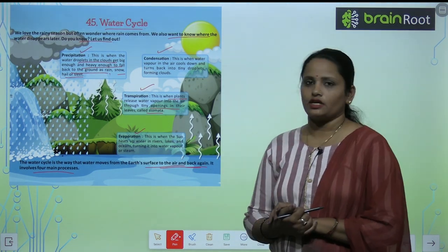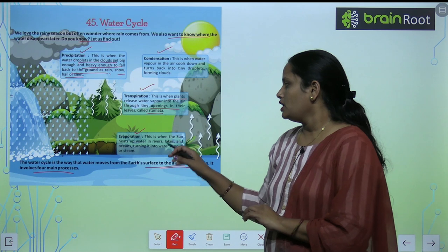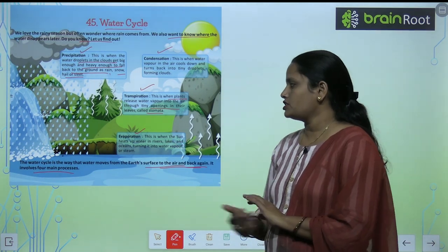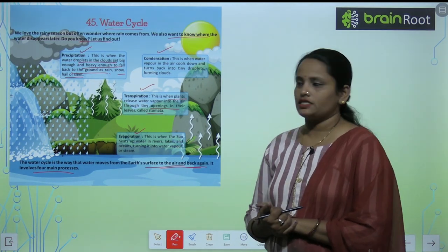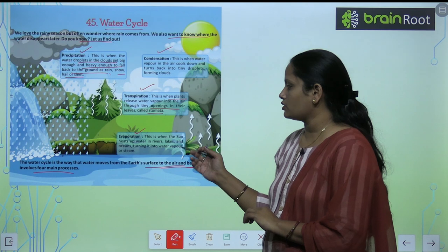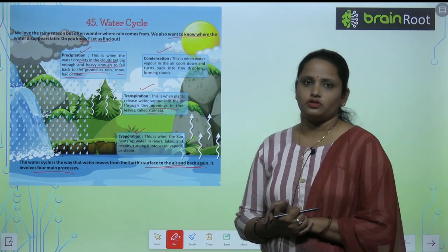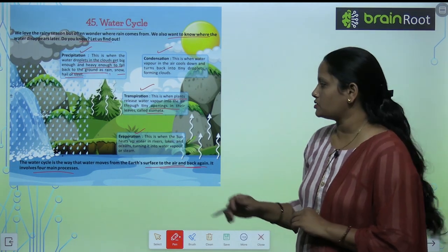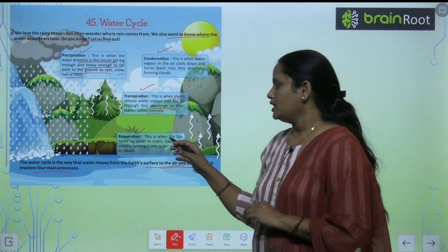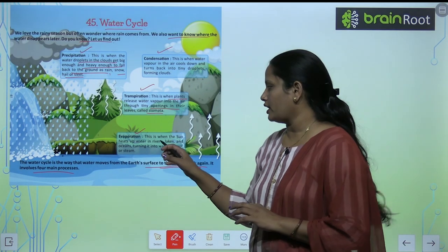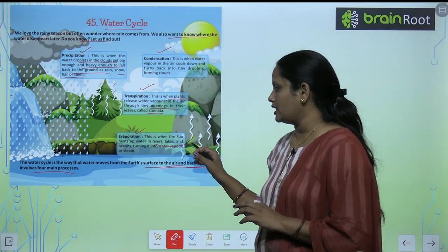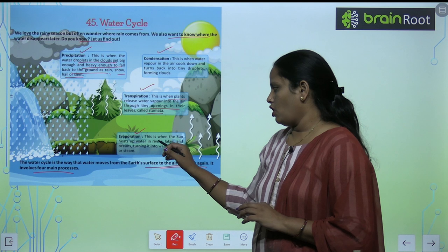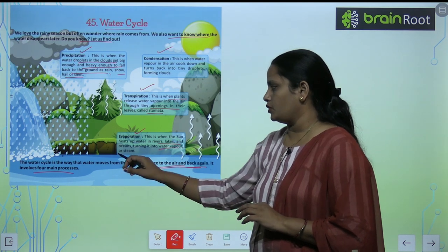Transpiration is when plants release water vapor into the air through tiny openings in leaves called stomata. Evaporation is when the sun heats up water in rivers, lakes and oceans, turning it into water vapor.